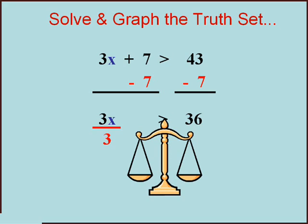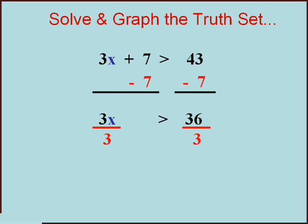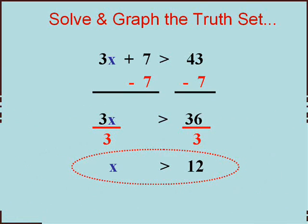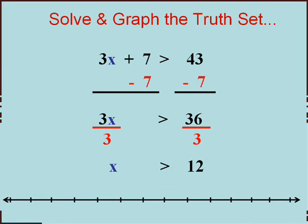Got to do it on both sides and I'll have 1x. Well, I don't write 1x. I write x. That's why I tried to get rid of the 3, not to create a 1. x is greater than 12. Okay, and then I would graph it. I would draw a picture.